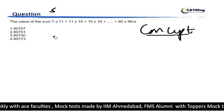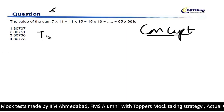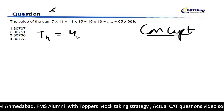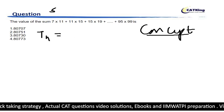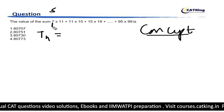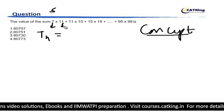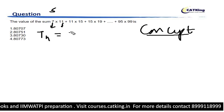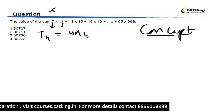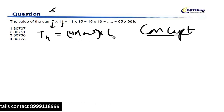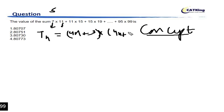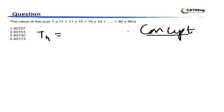So what's the general term? If you see, the general term Tn can be written as 4n plus something. So if you look at 7, 11, 15 — the common difference is 4.